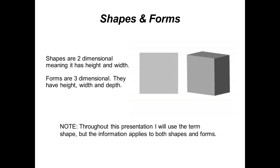Shapes are two-dimensional, meaning they have height and width. Forms are three-dimensional — they have height, width, and depth. Throughout this presentation I will use the term shape, but whatever I'm saying applies to both shapes and forms; it just becomes easier to say one opposed to both.